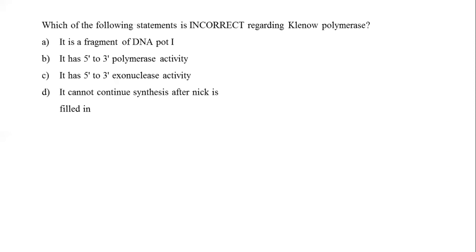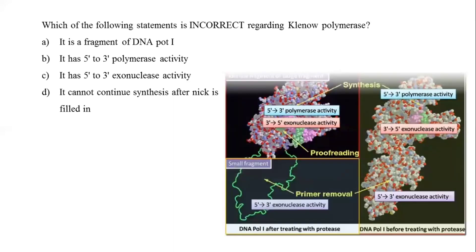The next question asks which of the following statements is incorrect regarding Klenow fragment. Option A: it is a fragment of DNA polymerase I. Option B: it has 5' to 3' polymerase activity. Option C: it has 5' to 3' exonuclease activity. Option D: it cannot continue synthesis after a nick is filled in.